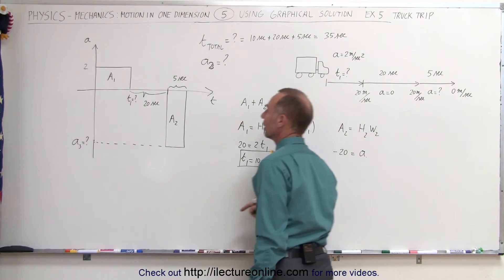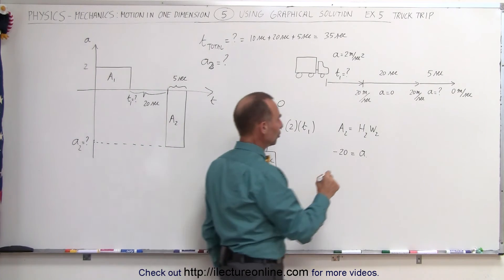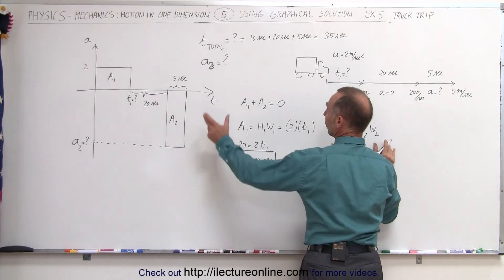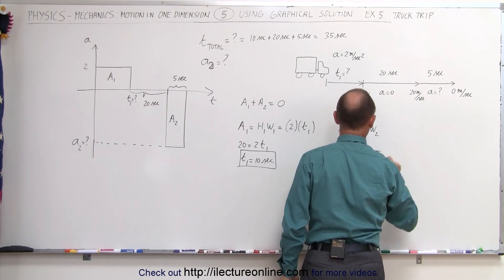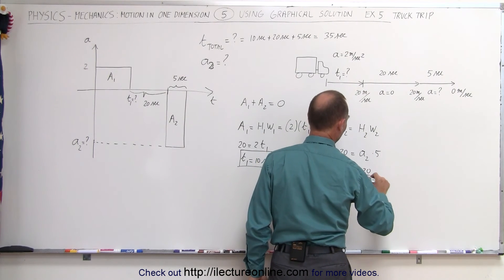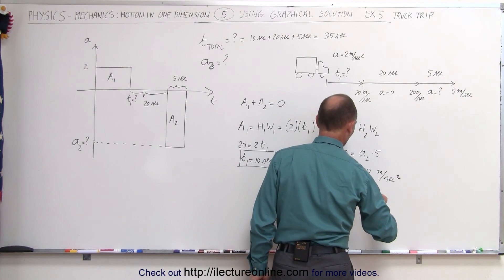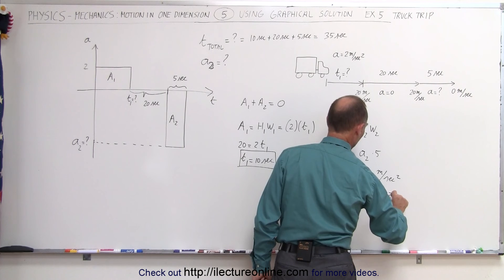The height of that would be the acceleration a2, let me call it a2 so I stay consistent, a2, and then the width of that was given to be five seconds times five. So therefore a2 equals minus 20 divided by five, that would be meters per second squared, and so a2 would equal minus four meters per second squared.